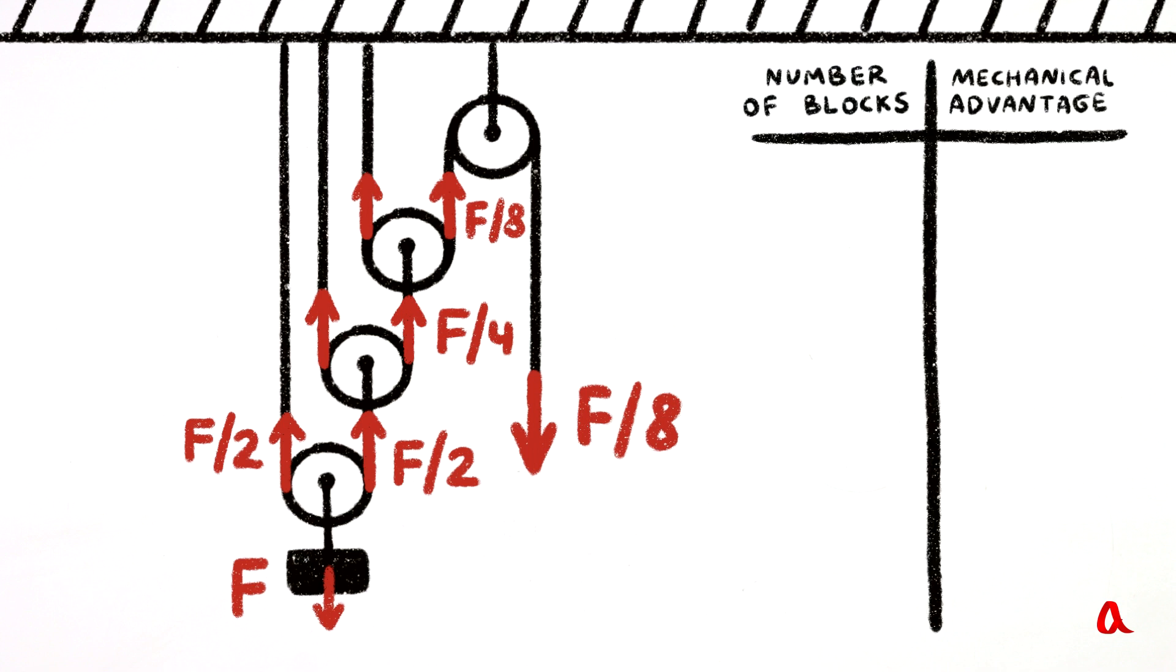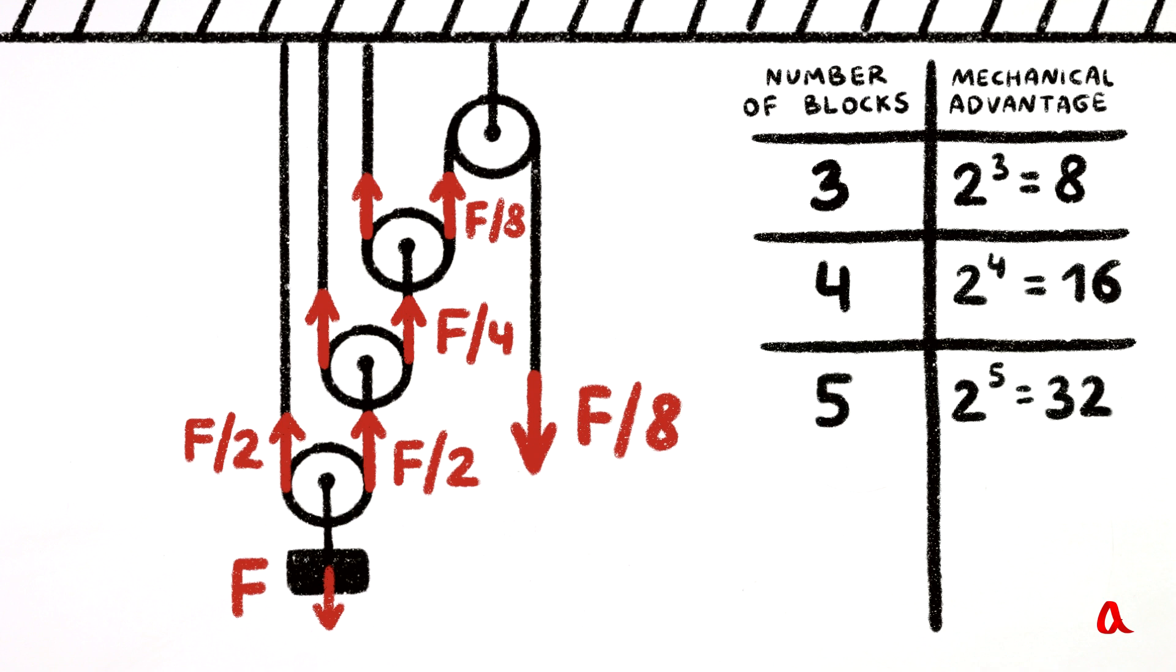The mechanical advantage equals two on each level. Thus, the three-level advantage equals two to the power of three, which is eight. For four levels, the mechanical advantage would equal sixteen. For five levels, thirty-two, and so on.